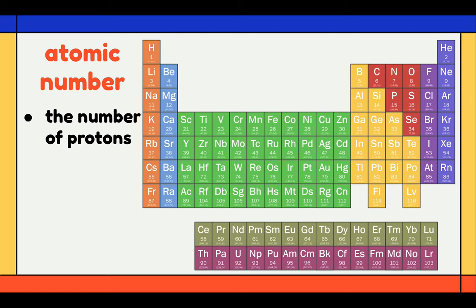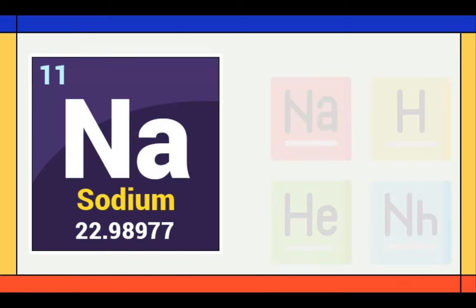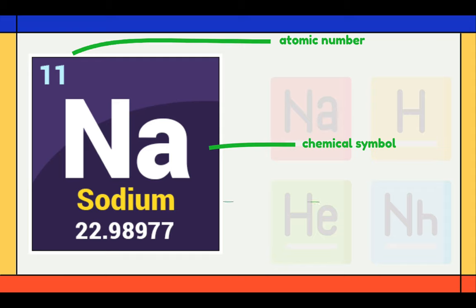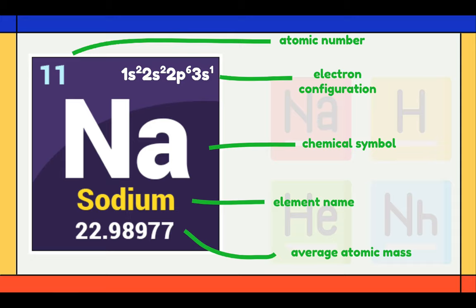You have to take note that in a neutral atom, the number of protons is equal to the number of electrons. If you look closely, you will see that this 11 is called the atomic number, and this is the chemical symbol.